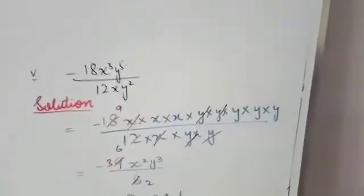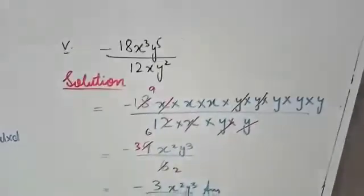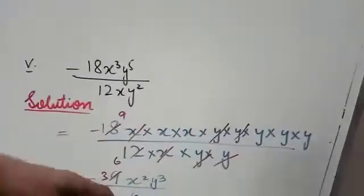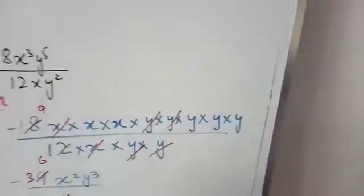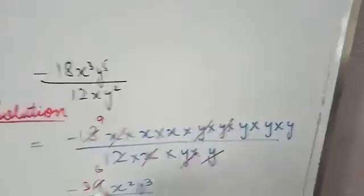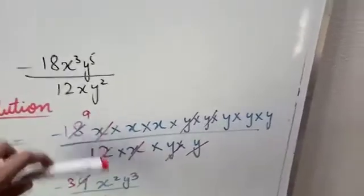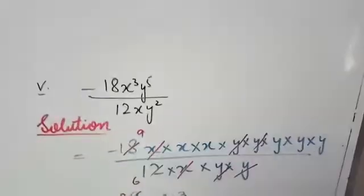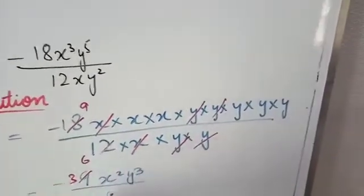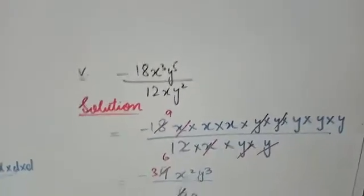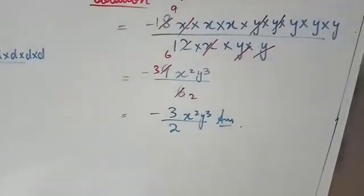You can cancel directly, though expanding makes it easier to avoid mistakes. After canceling x once and y twice, you have x² and y³. For the coefficient: minus 18 divided by 12 — cancel using 6: 6×2=12 and 6×3=18, giving minus 3 over 2. So the final answer is minus (3/2)x²y³.